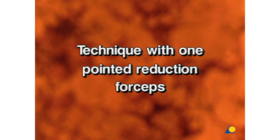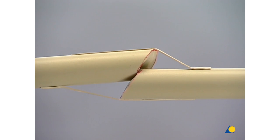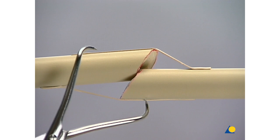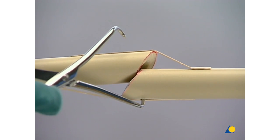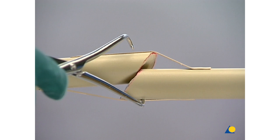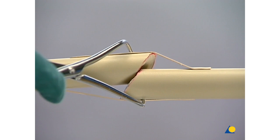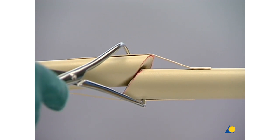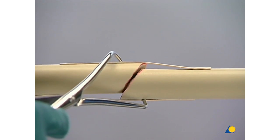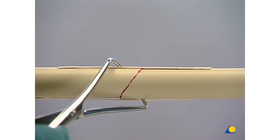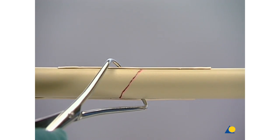Technique with One-Pointed Reduction Forceps. With a simple oblique shaft fracture, the proximal and the distal main fragments can each be grasped by one jaw of the reduction forceps. Tilting the forceps results in the desired extension and the reduction of the additive dislocation.